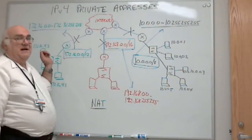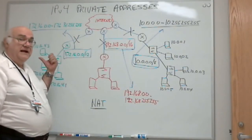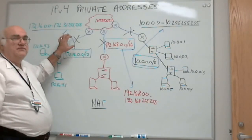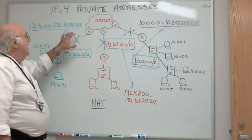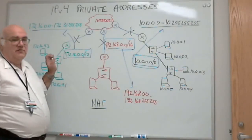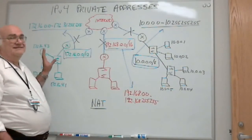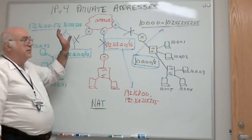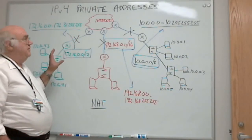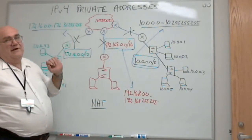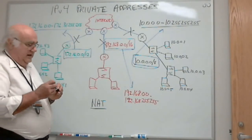When the replies come back from the Internet to that public address, he looks and sees who he associated that public address with, what private address, and then he can make sure the information gets to the right person. So that's what we do. Network Address Translation allows borrowing of a public address for a temporary period of time to associate it with a private address so that that private address can communicate on the Internet.